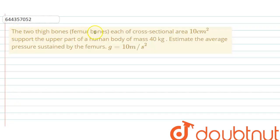Two thigh bones, each of cross-section area 10 centimeter square, support the upper part of human body of mass 40 kg. Estimate the average pressure sustained by the femurs. g is given as 10 meter per second square.